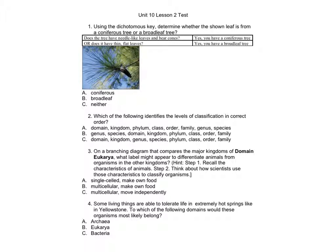Unit 10 Lesson 2 Test. Number 1: Using the dichotomous key, determine whether the shown leaf is from a coniferous tree or a broadleaf tree. Does the tree have needle-like leaves and bear cones? Yes, you have a coniferous tree. Or does it have thin flat leaves? Yes, you have a broadleaf tree. A: coniferous, B: broadleaf, C: neither.